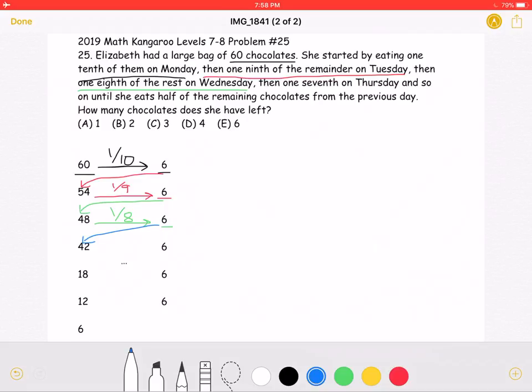And this pattern will repeat. She will continue to eat six chocolates each day. So we can continue this for a bit until we get to 18 chocolates.